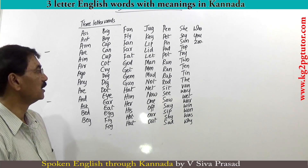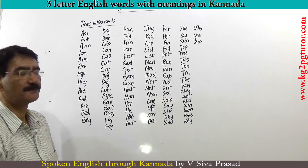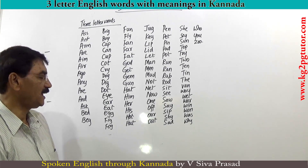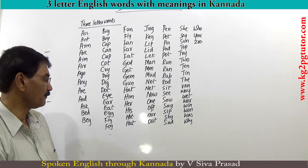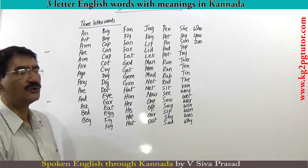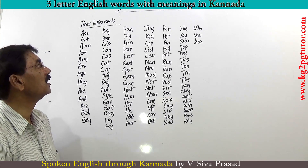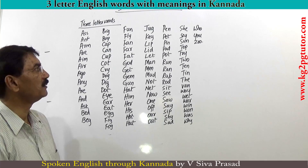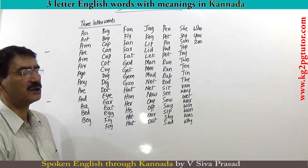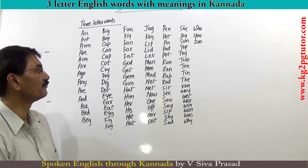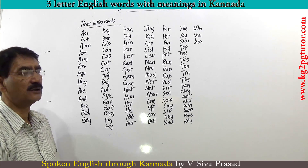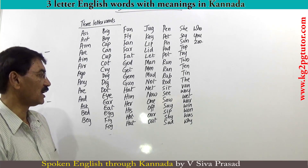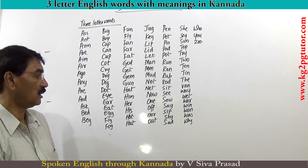EGG (motte/egg), FIG (hatti annuk/fig), FOG (manjuk eradaarthtbaruth), FUN (tamashe/fun), FLY (haru/fly), FAN (panka/fan), FAR (doora/far), FAT (dappa/fat), GOD (devaru/God), GET (paday/get), GEM (ratna/gem), GUN (banduku/gun), HAT (topi/hat), HIM (avanannu), HER (avalu), HIS (avanannu/avana).